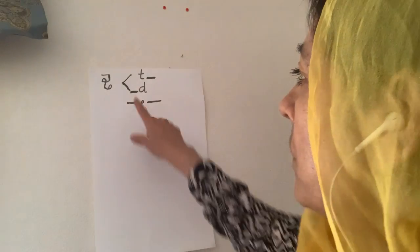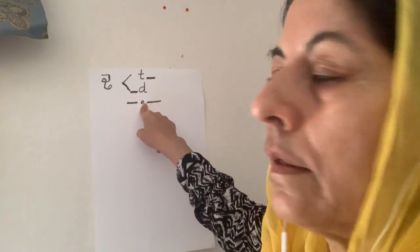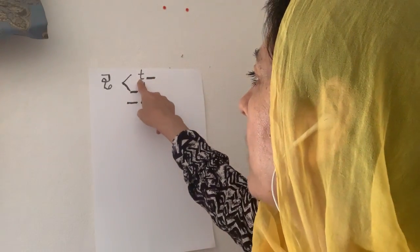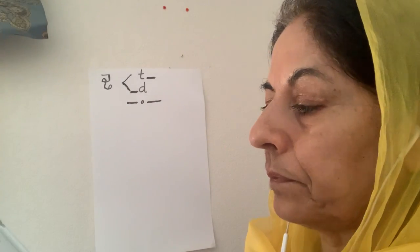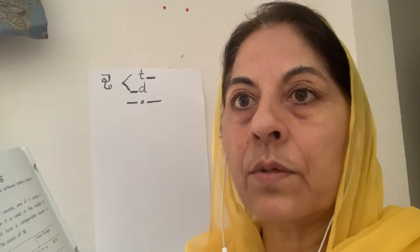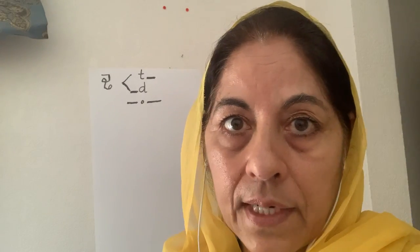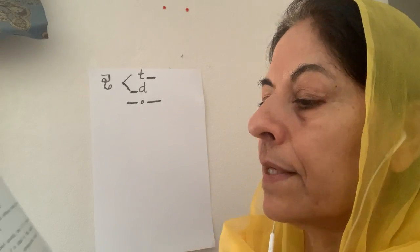Tadda. So this is Tadda. It can make a sound T or D. T when it comes at the beginning, T when it comes at the end. It's one of the language standards that you know the sounds of all the letters, like in English you know the sounds of all letters.